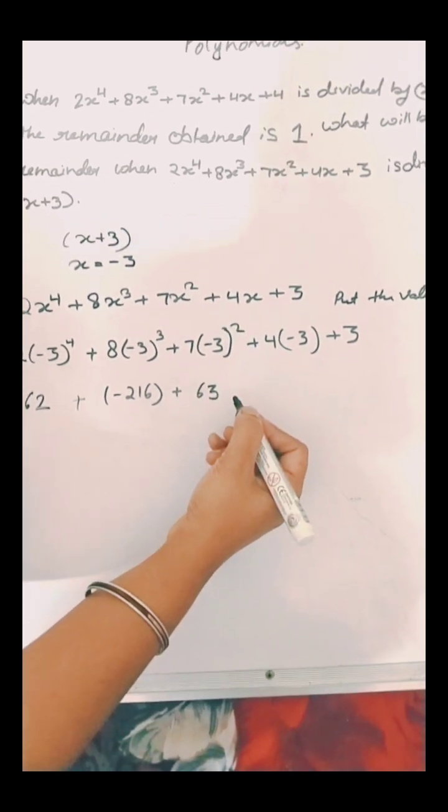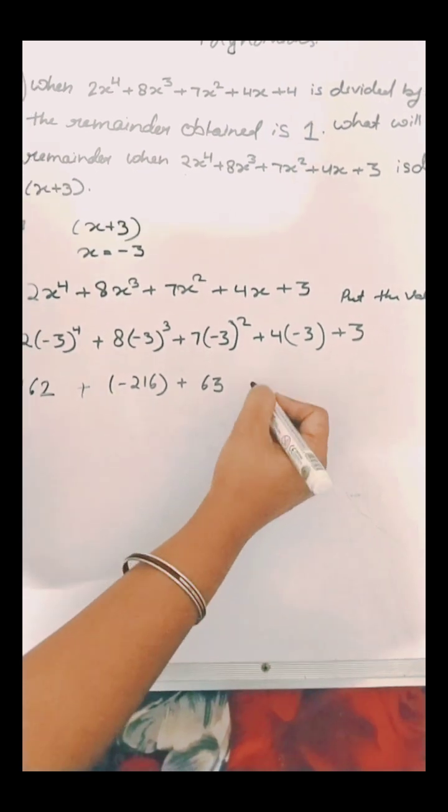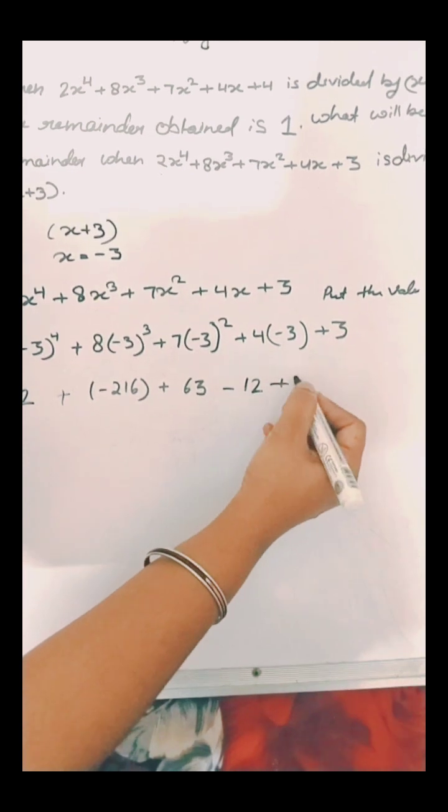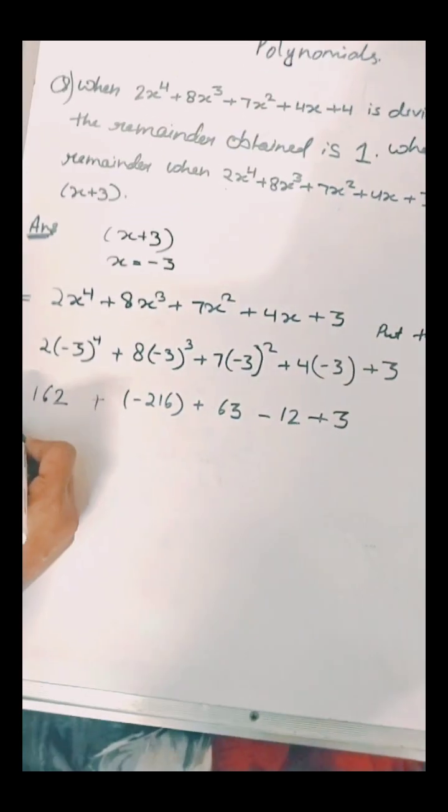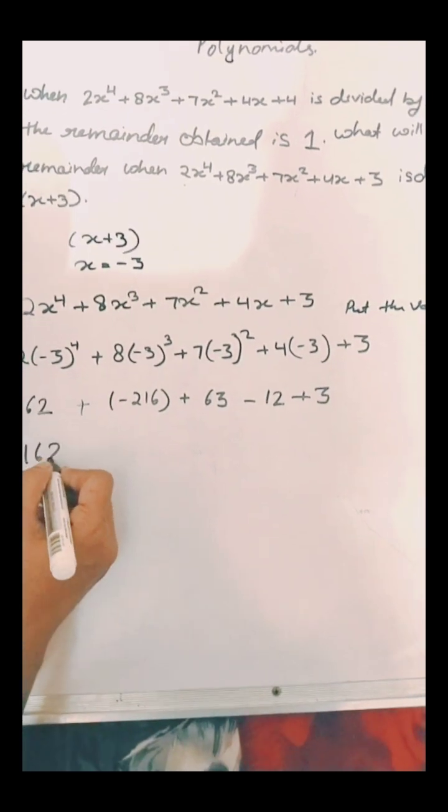4 by minus 3 we will get minus 12, and 3 will be written as it is. So firstly we will rearrange them according to the property like positive and negative.